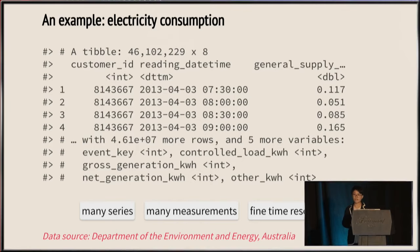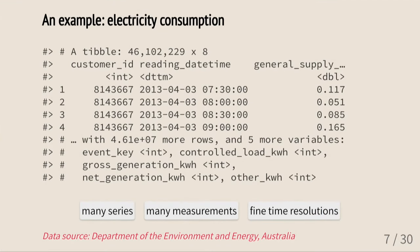Now we're going to have some fun with an open dataset about residential electricity consumption in Australia. It's a Tsibble with 46 million observations and eight variables. The column customer ID includes unique identifiers for each household — thousands of households in this dataset. The reading date time gives timestamps when the reading is recorded every 30 minutes. General supply is the variable we are interested in forecasting.